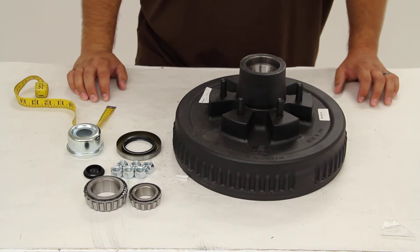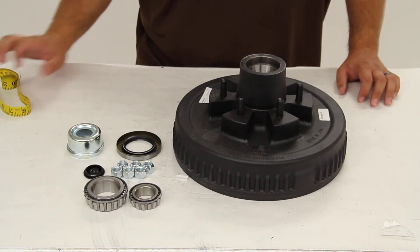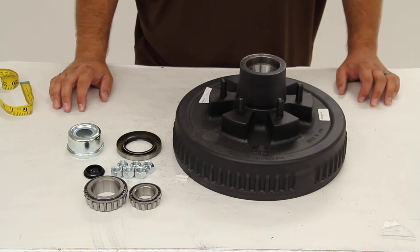Today we're going to take a quick look at Dexter Axle's trailer hub and drum assembly, part number 8-201-9U-C3-EZ.